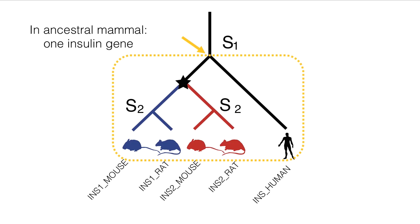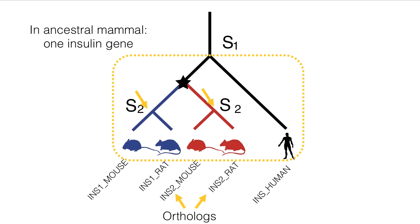Orthologs, as you may remember, are genes related by speciation. This could be the basal speciation — the one that's used to define the HOG, S1 in this example — or this could be a subsequent speciation, S2.